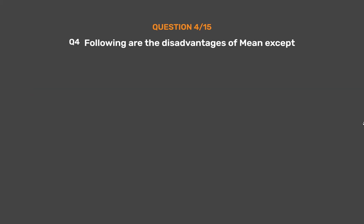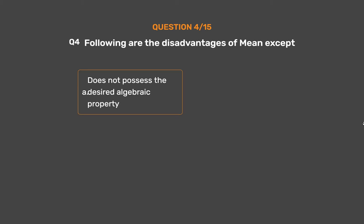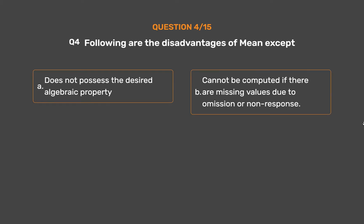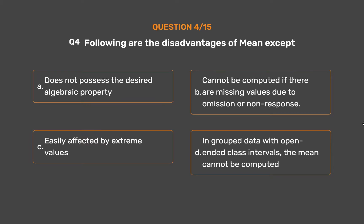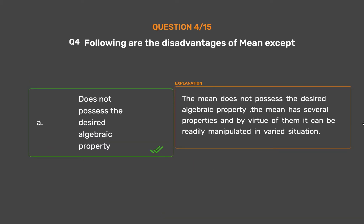Question number 4. Following are the disadvantages of mean, except. Option A: Does not possess the desired algebraic property. Option B: Cannot be computed if there are missing values due to omission or non-response. Option C: Easily affected by extreme values. Option D: In grouped data with open-ended class intervals, the mean cannot be computed. The correct answer is Option A: Does not possess the desired algebraic property.